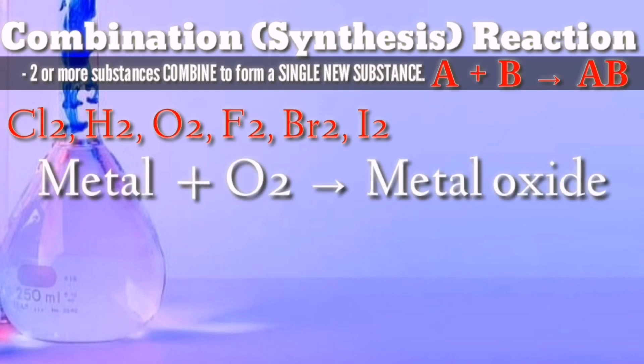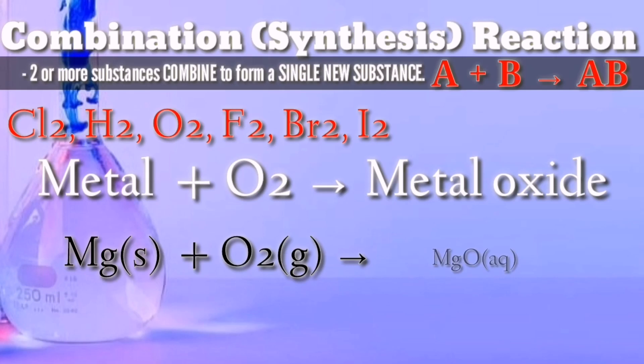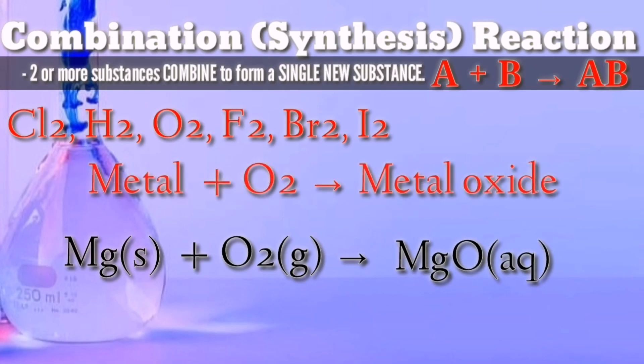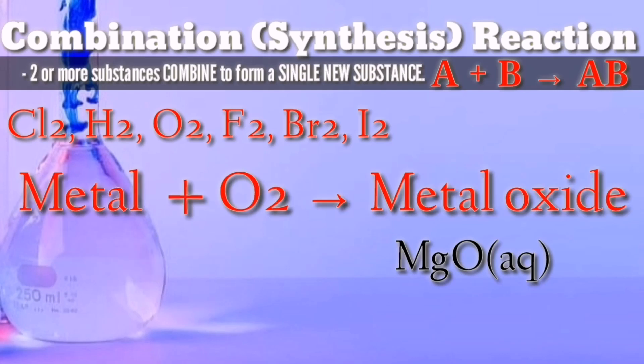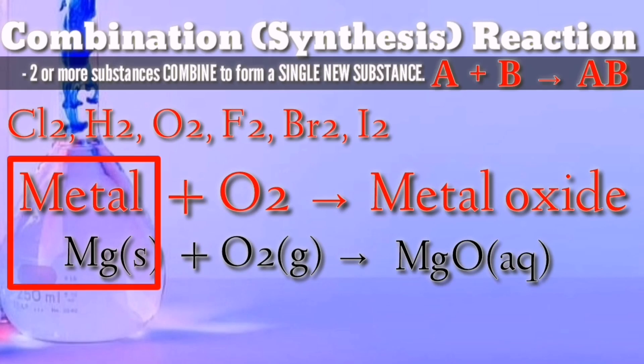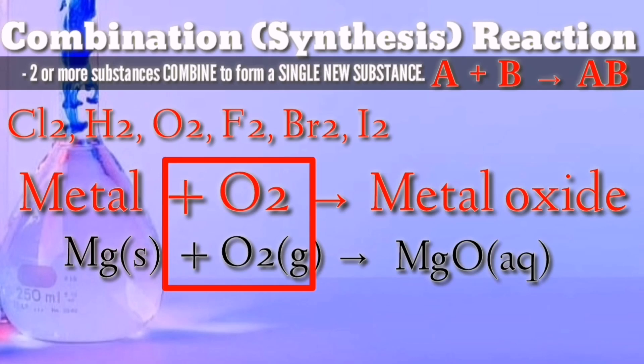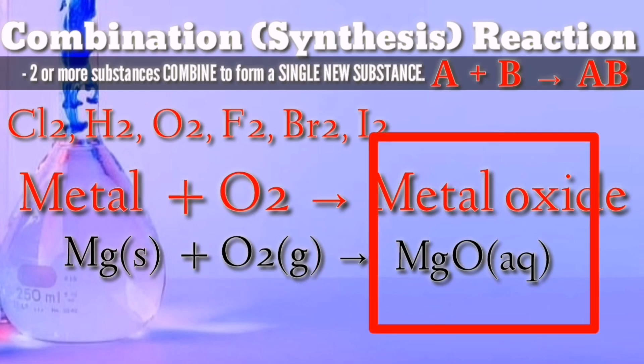One type of combination reaction that occurs frequently is the reaction of an element with oxygen to form an oxide. Metals and non-metals both react readily with oxygen under most conditions. Magnesium reacts rapidly and dramatically when ignited, combining with oxygen from the air to produce a fine powder of magnesium oxide. Any metal element that combines with oxygen gas will produce a metal oxide, which is magnesium oxide.